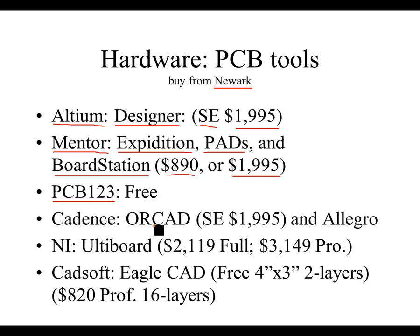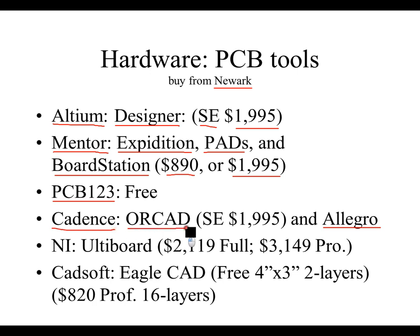Cadence Orcad — Orcad came from the Microsim software; Cadence bought Microsim. You can get the SE version from Newark for $19.95. They also have Allegro as another tool. Cadence is the company, Orcad is the software tool, and Allegro would be more expensive. You can check that price as well.